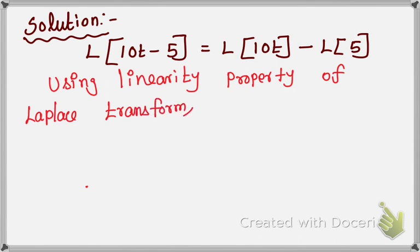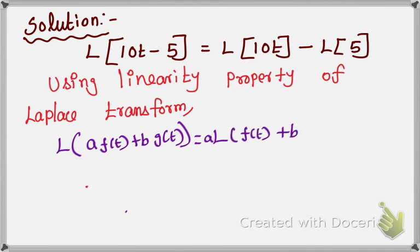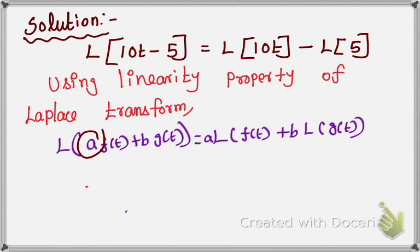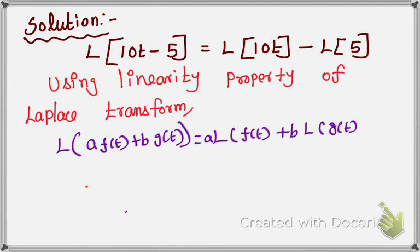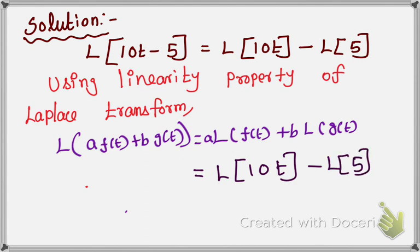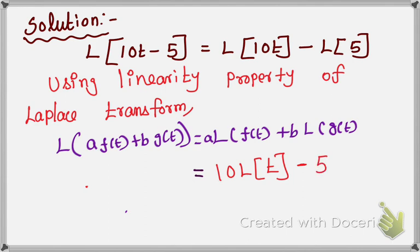The linearity property formula is: L of A·f(t) plus B·g(t) equals A into L of f(t) plus B into L of g(t). That means if you have a constant inside, the constant comes outside. In our problem, 10 is a constant and 5 is a constant. So you take them outside using this property. After taking the constants outside, your problem becomes 10 times L of t minus 5 times L of 1.